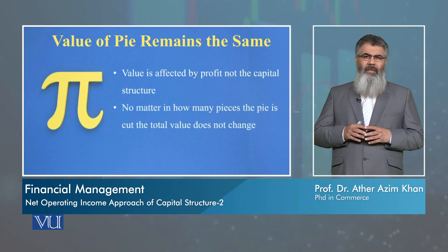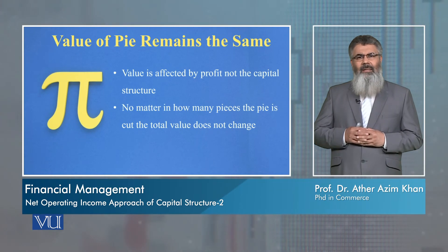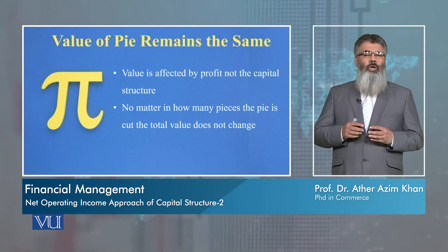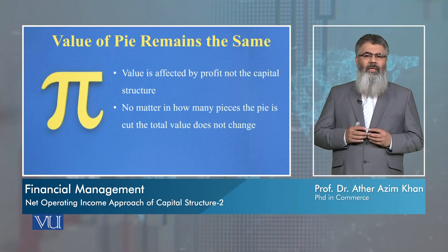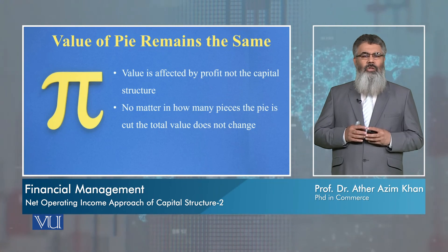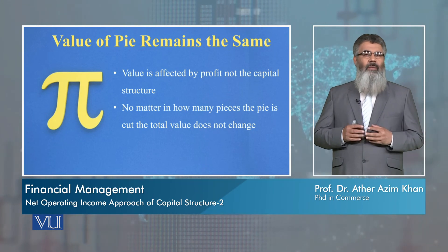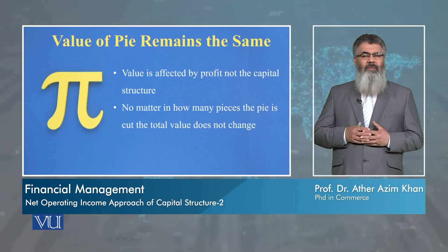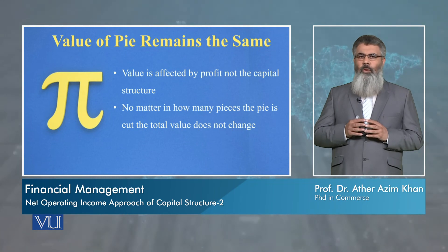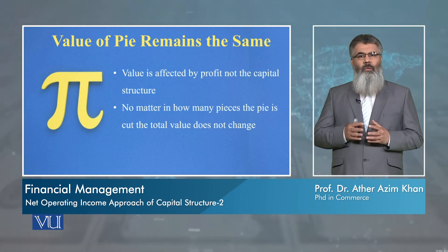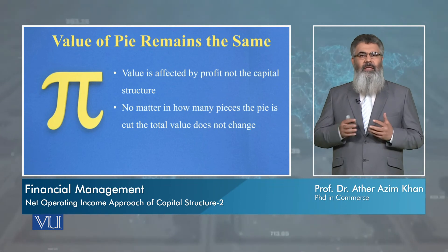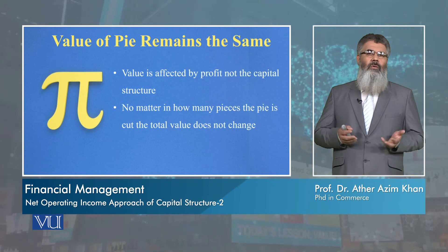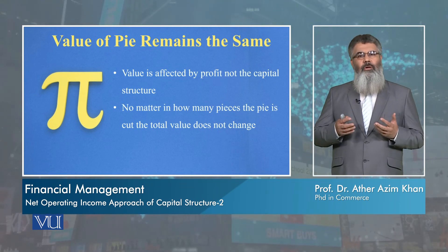To summarize: the Net Operating Income approach states that no matter in how many pieces a pie is cut, the total value of the pie will not change. Applied to capital structure, this means that no matter in what proportion we divide the overall capital of a firm into debt and equity, the total value of that capital and the total value of the firm will not change.